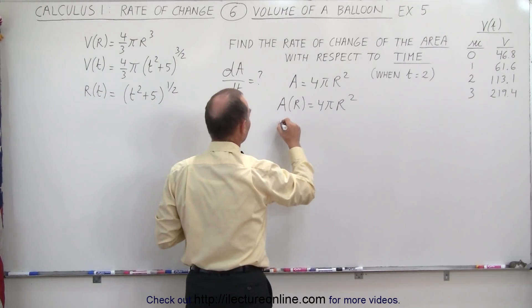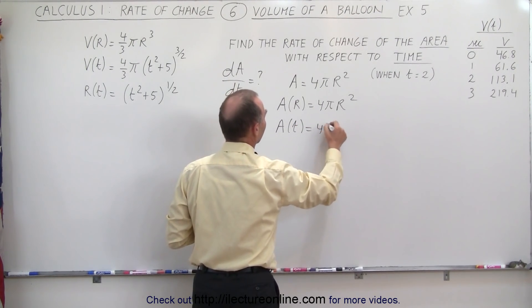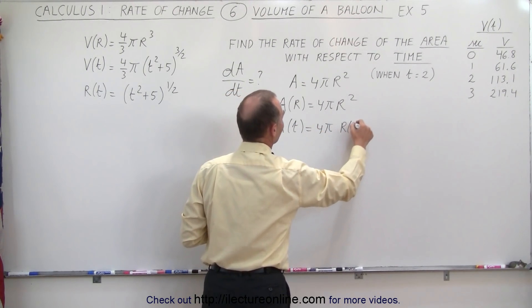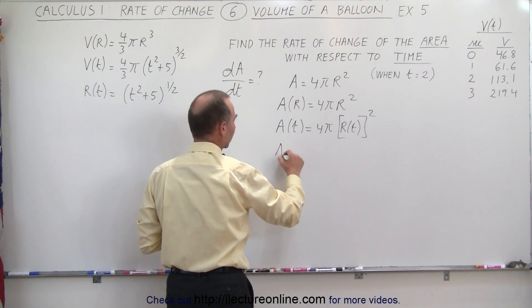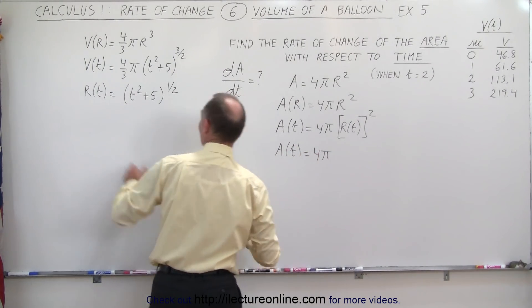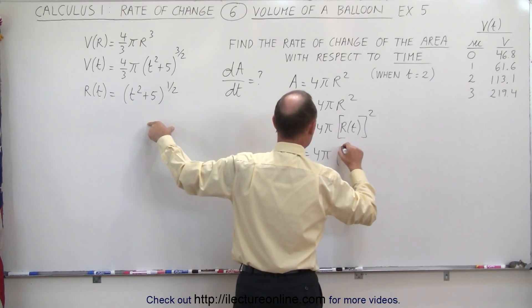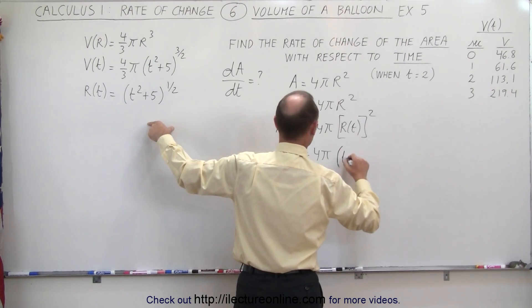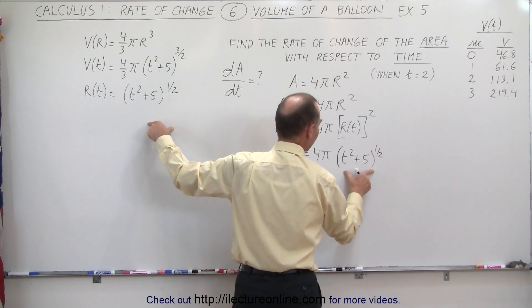In other words, we can say that A as a function of time is equal to 4π times the radius as a function of time quantity squared. So this means that we take the equation and now write it as 4π times this quantity squared, so it would be the quantity of (t²+5) to the 1/2 power, which is the radius as a function of time, and then we square that.